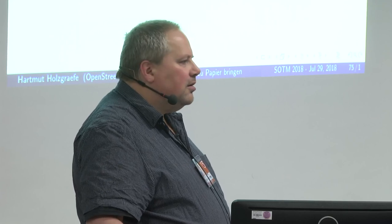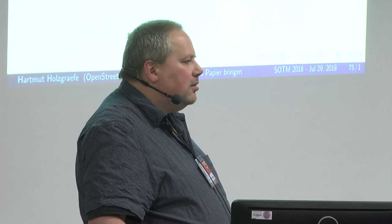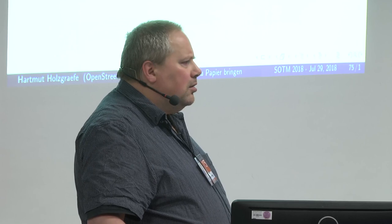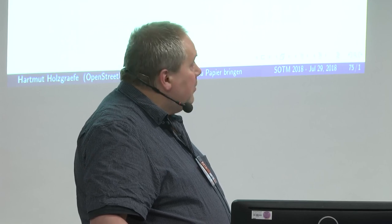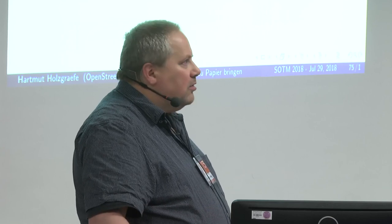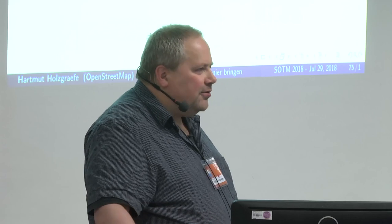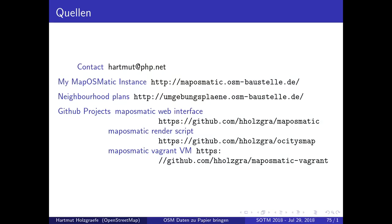A final question about whether the Hike & Bike style contains height and slope information like a topographic map: no, but there is a contour lines overlay from OpenStreetMap data available. It doesn't look as integrated as in OpenTopoMap but still gives you an idea of the landscape contours. Thanks everyone.